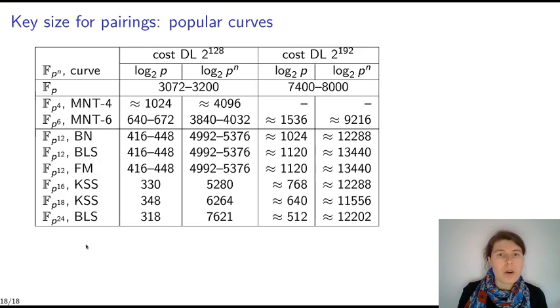We can also look at popular pairing-friendly curves. So we have MNT curve 4 and 6. So these results are from an ongoing project. And BN, BLS and Fotiadis-Martindale curve. So actually, we find that between 416 and 448 bits, so we match some machine word size. We have 128 bits of security with error margin. And for embedding degree 16, 18 and 24, actually, we are more constrained by the size of R. So with this size of P, then we are safe.